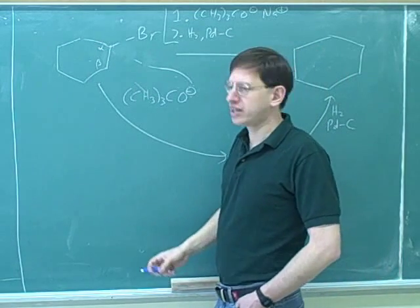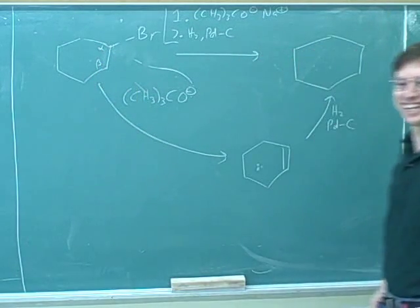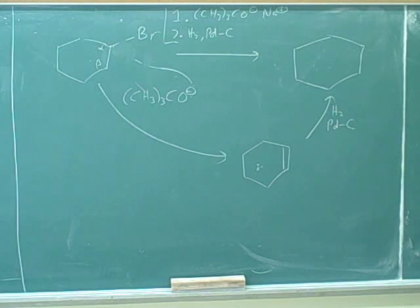Well, I think I know. OK, on the beta carbon, there's a hydrogen. And it's going to take that hydrogen, the hydrogen is going to give its electrons to the double bond, and then the Br will be removed. All right. I think you know, too. OK, good. Let's try drawing.